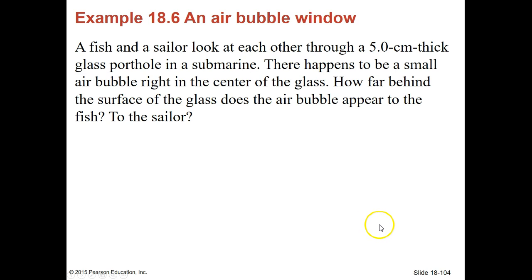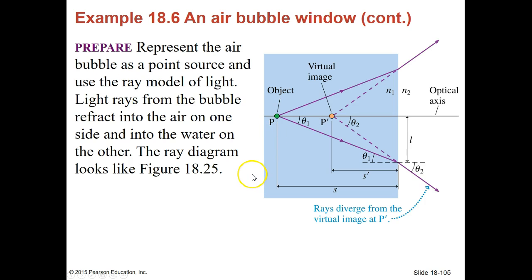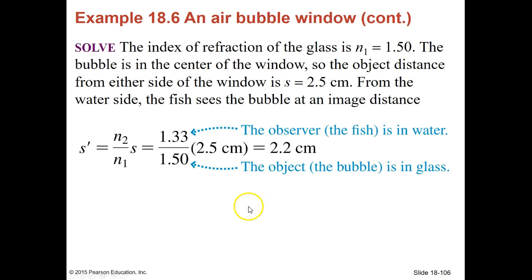So if I have an air bubble window — a fish and a sailor look at each other from a five-centimeter-thick glass portal in a submarine — there happens to be a small air bubble right in the center of the glass. They want to know how far behind the surface of the glass does the air bubble appear to the fish and to the sailor. To do that, we're going to represent the air bubble as a point source and use the ray model of light. Light from the bubble will refract into the air at one side and into the water on the other side, so the ray diagram looks like figure 18.25.